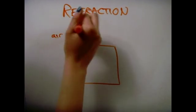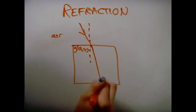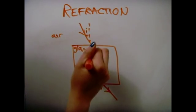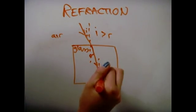Refraction. Light bends towards the normal when it travels into a more optically dense medium and it bends away from the normal when it travels into a less optically dense medium.